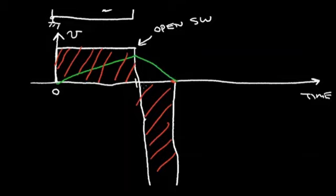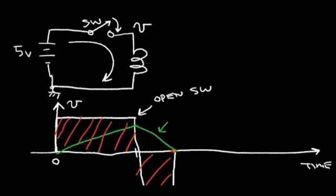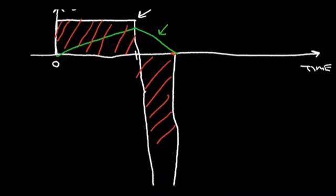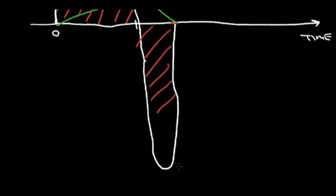In reality, this current can't drop instantly. There's always some parasitics in this circuit. There's parasitic capacitance in these windings. So there's always a little bit of parasitic. So the voltage won't go to infinity, but it'll become very large. And this voltage could even be potentially dangerous.